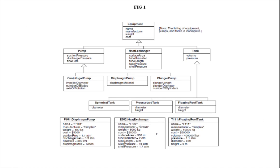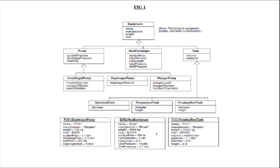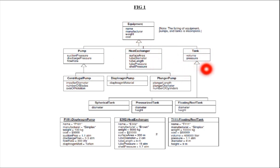I will explain the notation used to denote generalization in UML — Unified Modeling Language. We have to use a large hollow arrowhead to denote generalization. The arrowhead points to the superclass. This arrowhead is not filled — it is hollow.